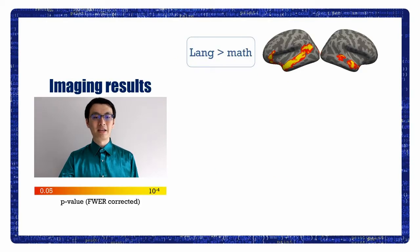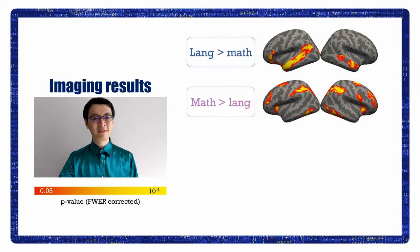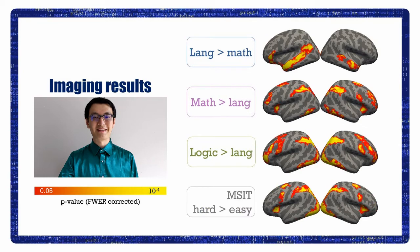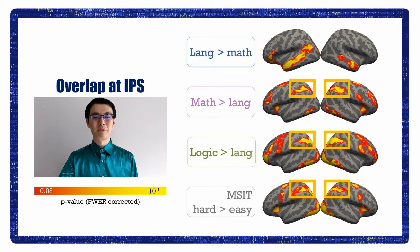Here's the neural activation in response to language, math, logic, and executive control. All of them are consistent with the canonical patterns revealed in the literature. Also consistent with the literature, math, logic, and executive control overlapped in the intraparietal sulcus.